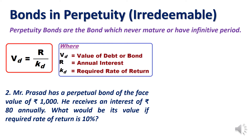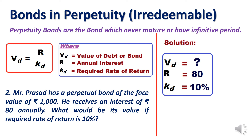Vd is the value of debt or bond, R is the annual interest, and Kd is the required rate of return. Consider this question: Mr. Prasad has a perpetual bond with a face value of 1000. He receives annual interest of 80 rupees — interest amount is directly given. What would be the value if the required rate of return is 10 percent? Simply apply the formula: Vd = 80 / 0.10 = 800 rupees.